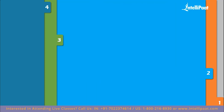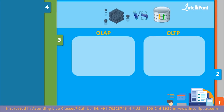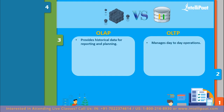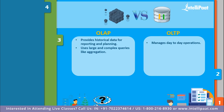Now let's discuss the parameters used to differentiate OLAP and OLTP databases. The first parameter is motive to use. OLAP systems provide a consolidated view of historical data of an enterprise for reporting, planning, and decision making, whereas OLTP systems are used to manage day-to-day fundamental operations. The next parameter is types of query. In OLAP, large and complex queries are used for making decisions, and aggregation of tables across multiple databases is frequently required. In OLTP, simple and standard queries are used which return only a few records.